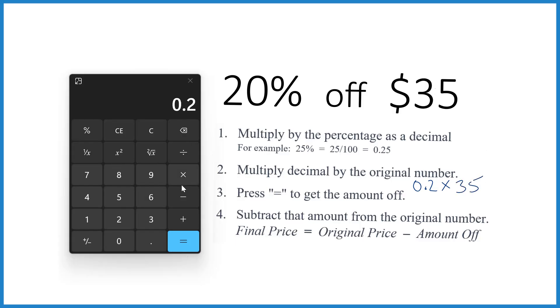And when you do that, 0.2 times 35, it equals you get 7. So the amount off that you get, that's $7. You get $7 off of your $35.